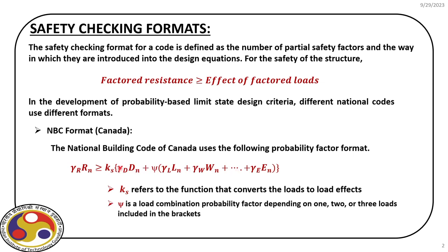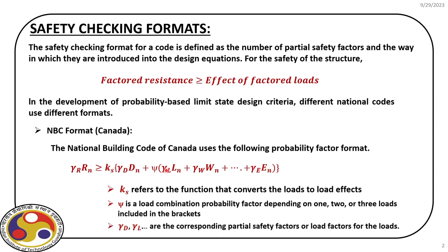In this format, the dead load is separated out from all other loads. We consider nominal dead load and multiply that with a factor γ_d. Then all other loads are combined in the function Ψ, within which we have the nominal loads — for example, live load, wind load, and earthquake load — along with their appropriate load factors γ_L, γ_W, and γ_E. If we multiply these with the nominal loads we get the combined load effect, which is combined in the Ψ function, added with the dead load effect, and passed through the Ks function to estimate the ultimate load effect.